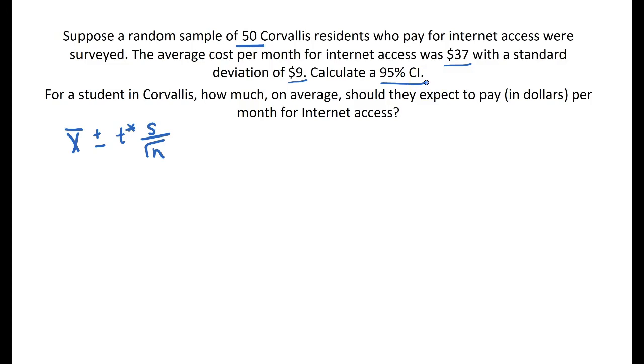So from this, we know that n is equal to 50. That's the number of people in our random sample. We know that x̄ is our sample mean. Our average from the sample is $37. The sample standard deviation—and how do we know it's a sample standard deviation? Well, it talks about the random sample of 50 Corvallis residents, and then it talks about the average and standard deviation in that same sentence. So that implies that that mean and that standard deviation are both coming from the sample. So s is equal to $9.